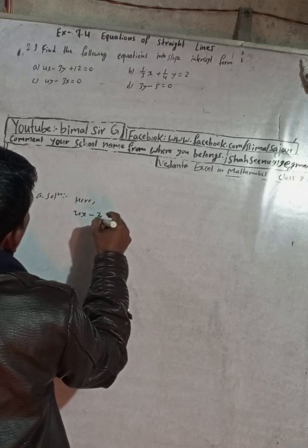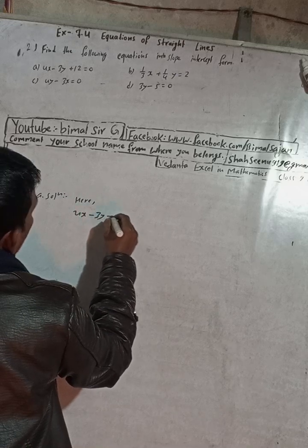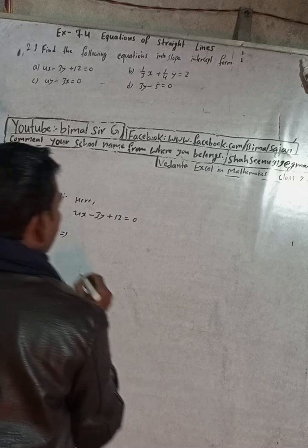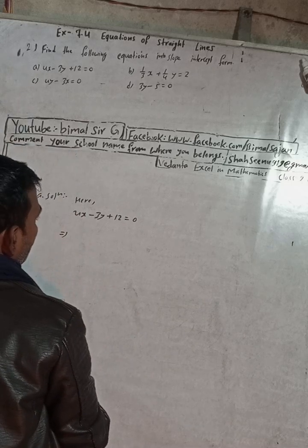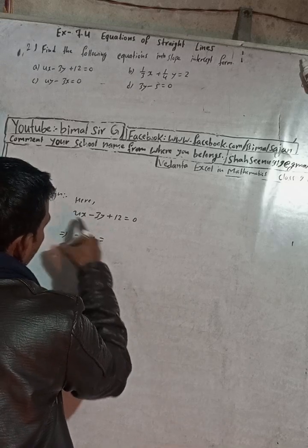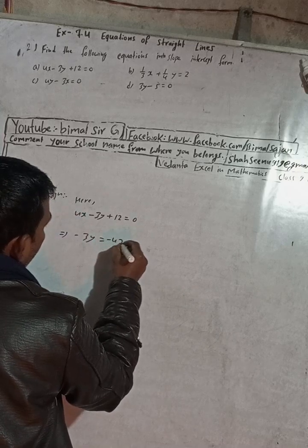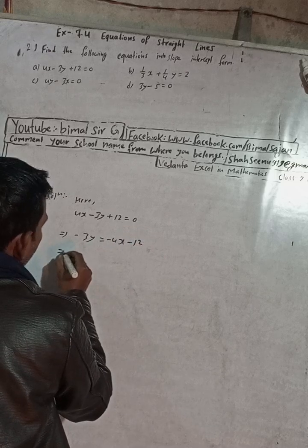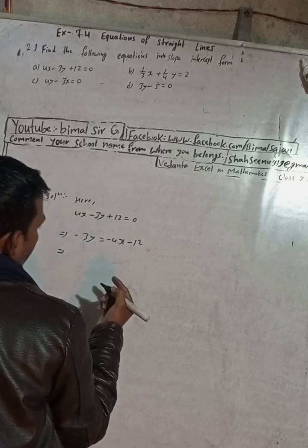4x - 3y + 2 = 0. This can be written as, we want in slope-intercept form, so put the y term 3y as it is on one side: 3y = 4x, so this side becomes -4x, and plus 2 becomes -2.